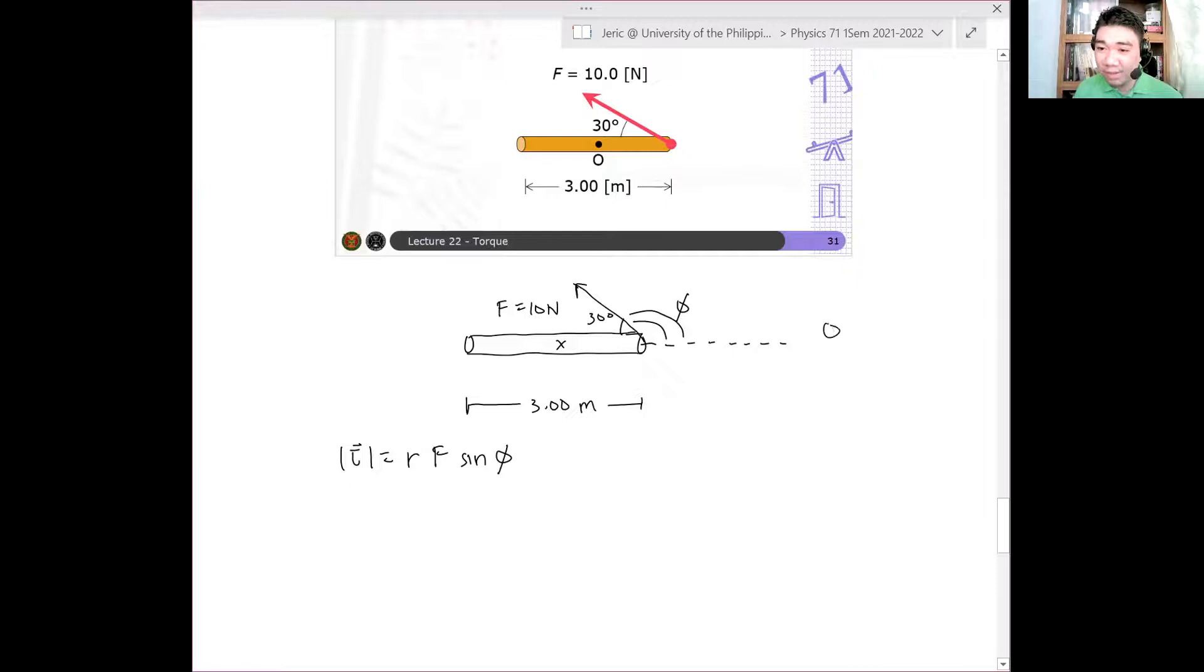Okay, therefore, what is F? What is now F? Of course, it's supplementary to 30 degrees and therefore this is just 150 degrees. I hope it's clear yung 150 degrees ha. Now, of course, the force is still 10 newtons. But what is the lever arm?